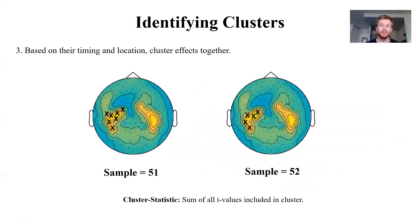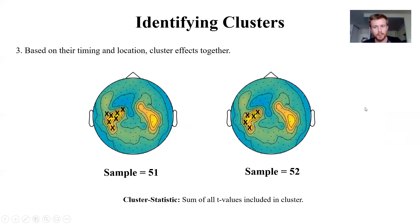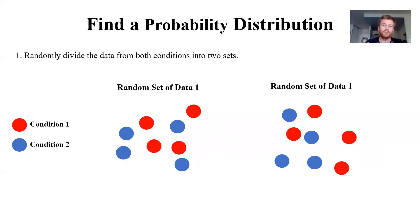Once we've identified the clusters, we quantify their size by summing up all the T-values within the cluster — across all the electrodes that are part of it and across all the time points it spans. For example, this might give us a value of 50, telling us how large that cluster was. Now we've done this for our two conditions and identified one or more clusters, each with their own size. What we want to do is determine which cluster sizes are significant and which are not.